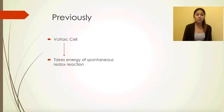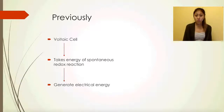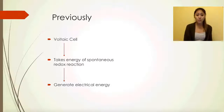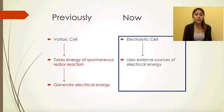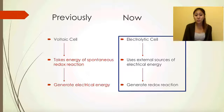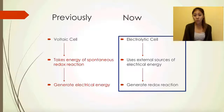Previously, a voltaic cell takes the energy of a spontaneous redox reaction. Because the reaction is spontaneous, we can generate electrical energy from it — voltaic cells are usually exothermic, so instead of heat we can generate electrical energy. For electrolytic cells, it takes an external source of electrical energy to generate a redox reaction, meaning the reaction doesn't occur spontaneously, so you must supply external electricity for the chemical reaction to run.